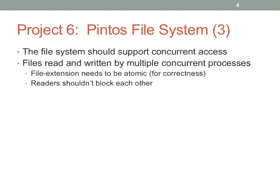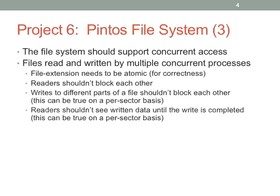Concurrent access: file extension is the only thing that should really block everybody. Concurrent writes to the same block should also block each other. Readers should basically never block each other — they can be blocked by writers. Writes to different parts of a file should not block each other, and this is generally true on a per-sector basis. Readers shouldn't see data written by writers until the write actually completes. Project 6 is pretty lenient on the actual set of correctness guidelines.